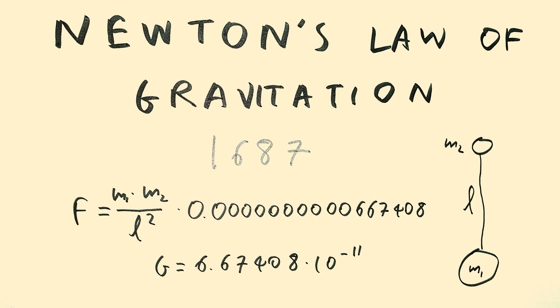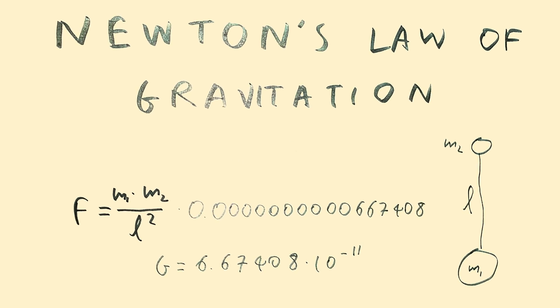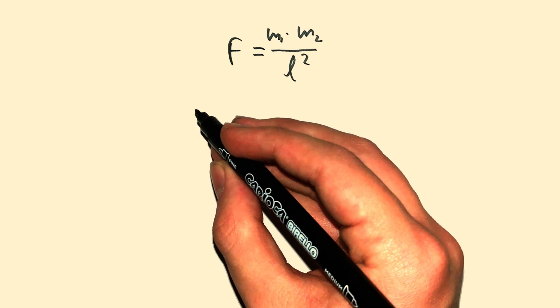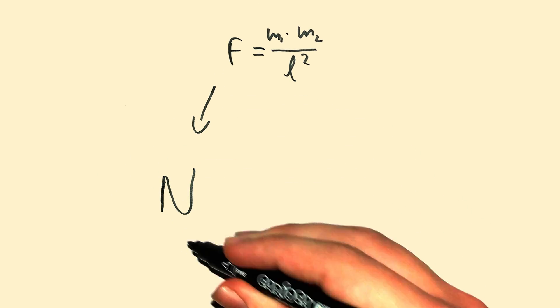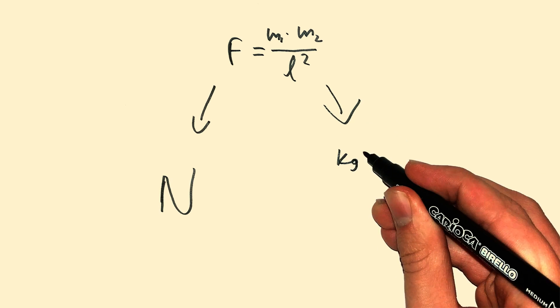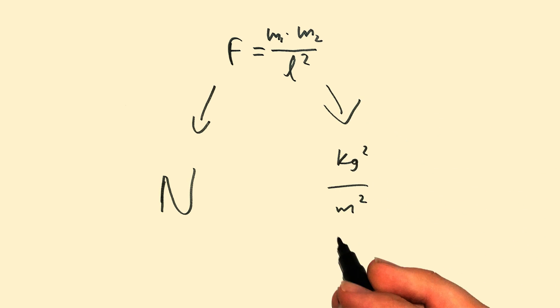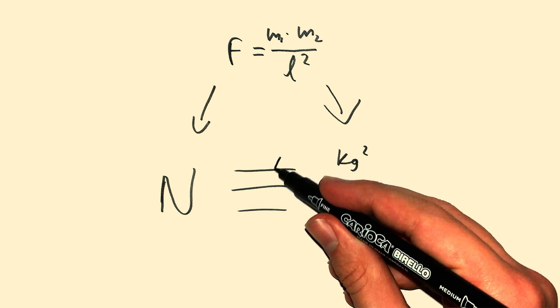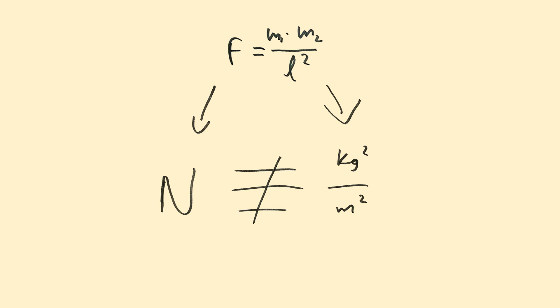But G serves a very specific purpose in the law of universal gravitation. It's not just a number, it also has units. You see, F is measured in newtons, but the right hand side is measured in kilogram squared over meter squared, and these two units are not equivalent to each other. So, you need something to make them equivalent.